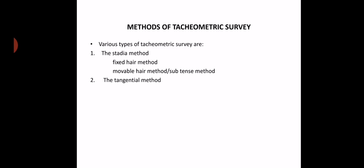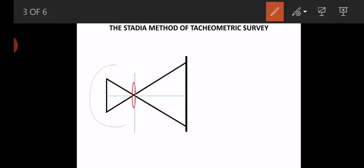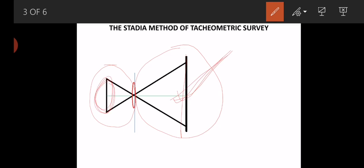The second method is the tangential method, where we find the distance between points by taking readings related to only the middle cross hair. The third method is measurements by special instruments. Now let's look at this figure — these two triangles are similar isosceles triangles. This triangle relates to the telescope, and the outside triangle represents the leveling staff. This line relates to the crosshairs.